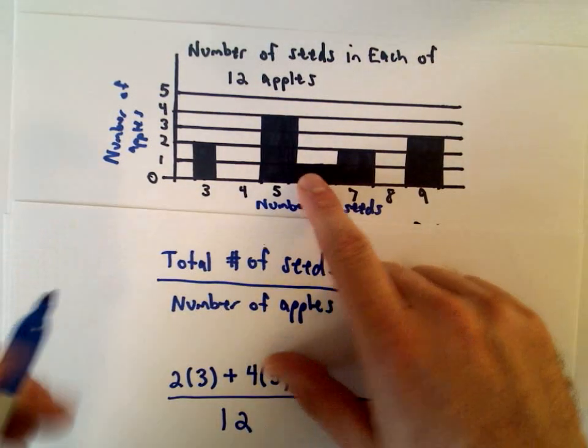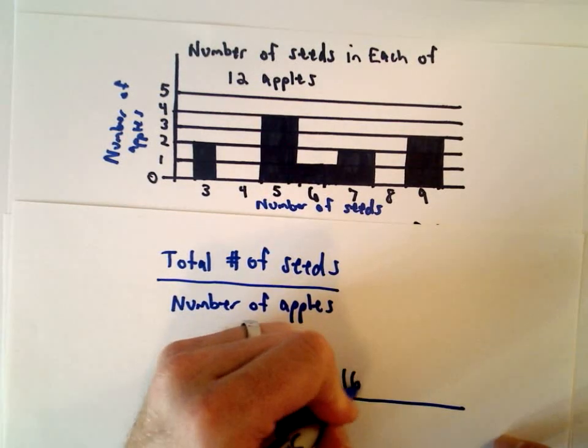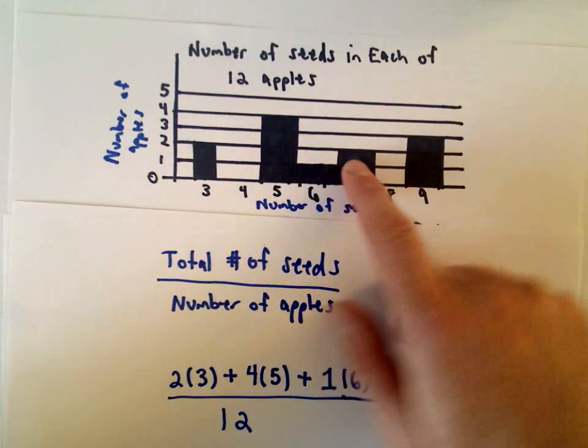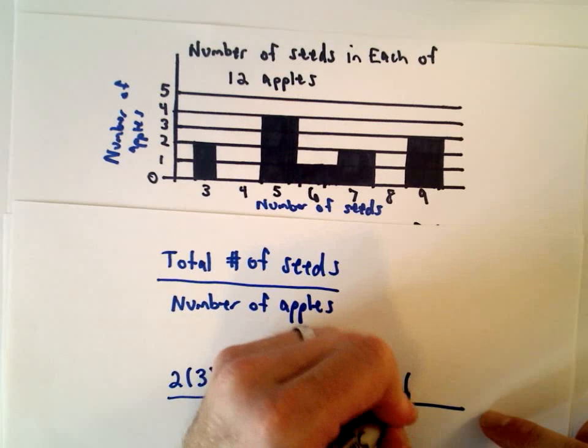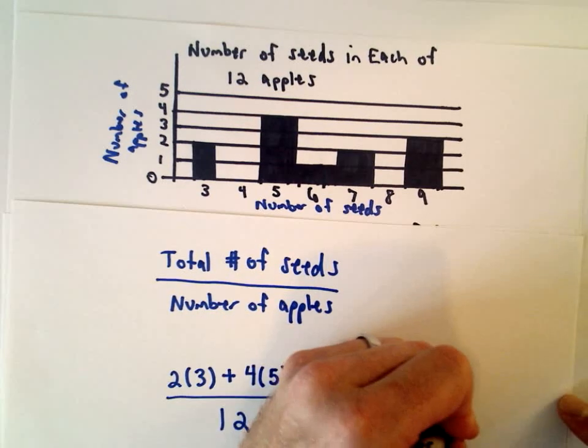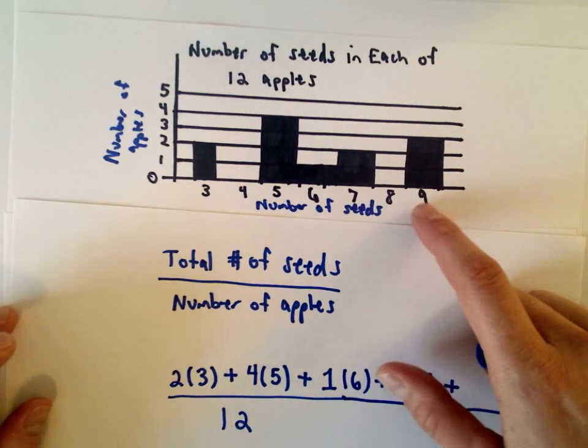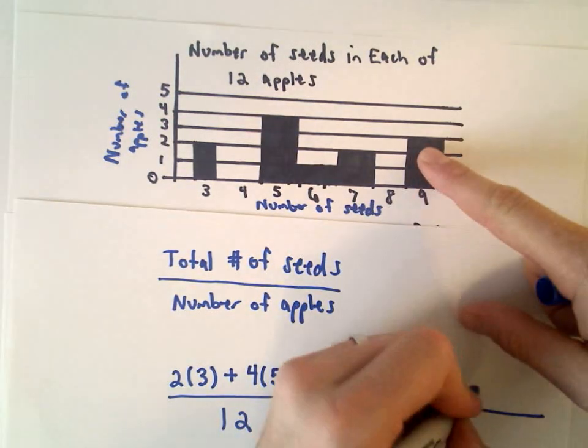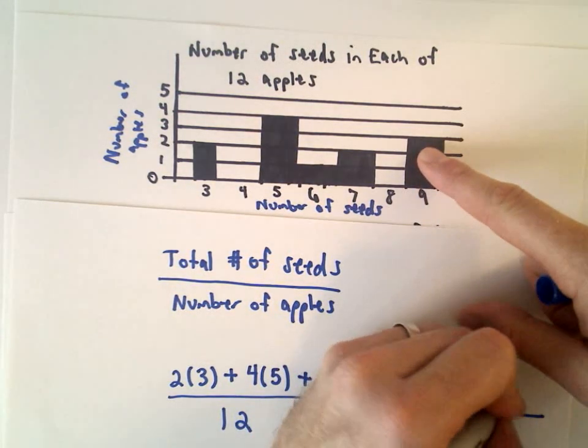We've got four apples that have five seeds each. We've got one apple that has six seeds. We have two apples that have seven seeds. And then last but not least, we have three apples that have nine seeds.